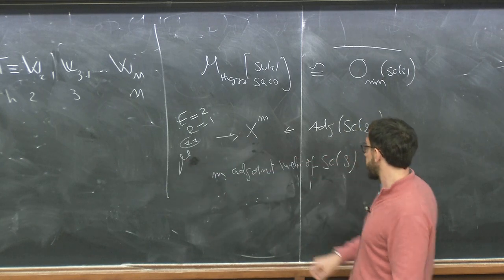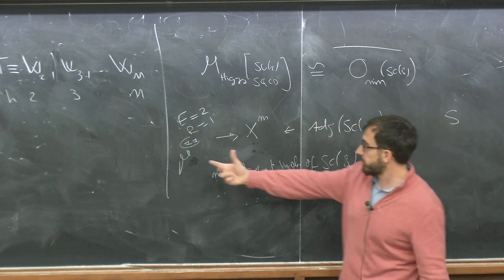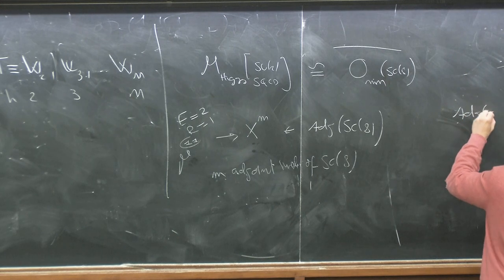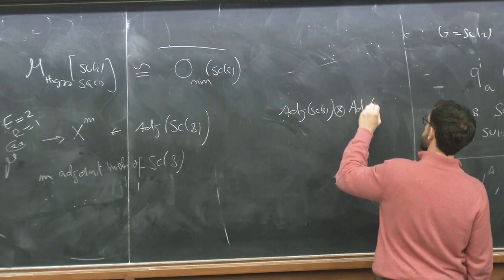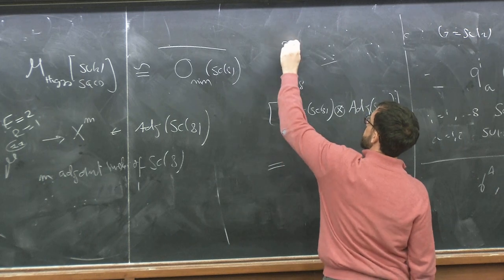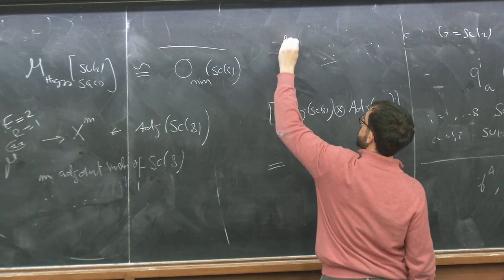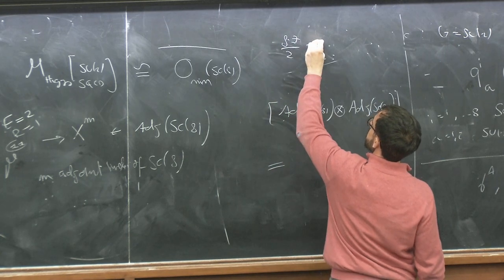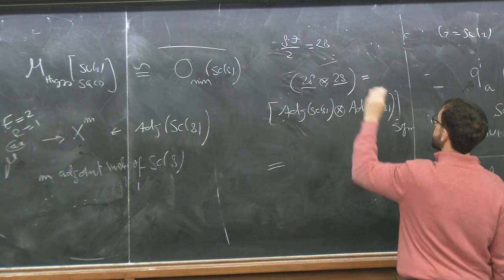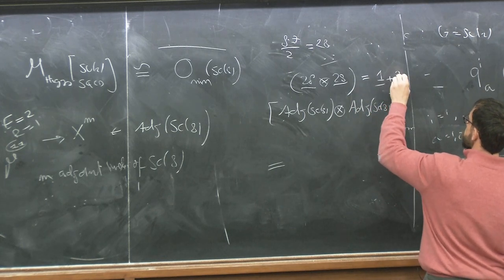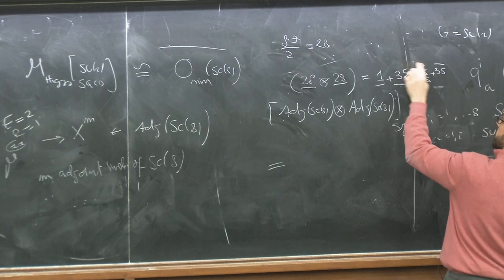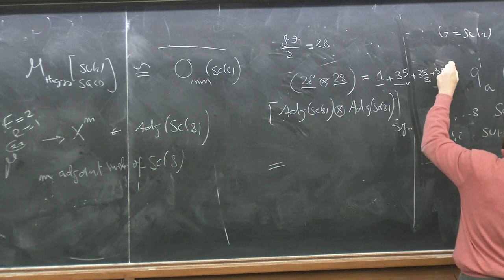If I take the product of two such objects, I need to take the symmetric product of the adjoint of SO(8). The adjoint of SO(8) is the 28, so I need to symmetrize 28 times 28, which gives the singlet plus the 35_V plus the 35_S plus the 35_C plus 300 plus 300.